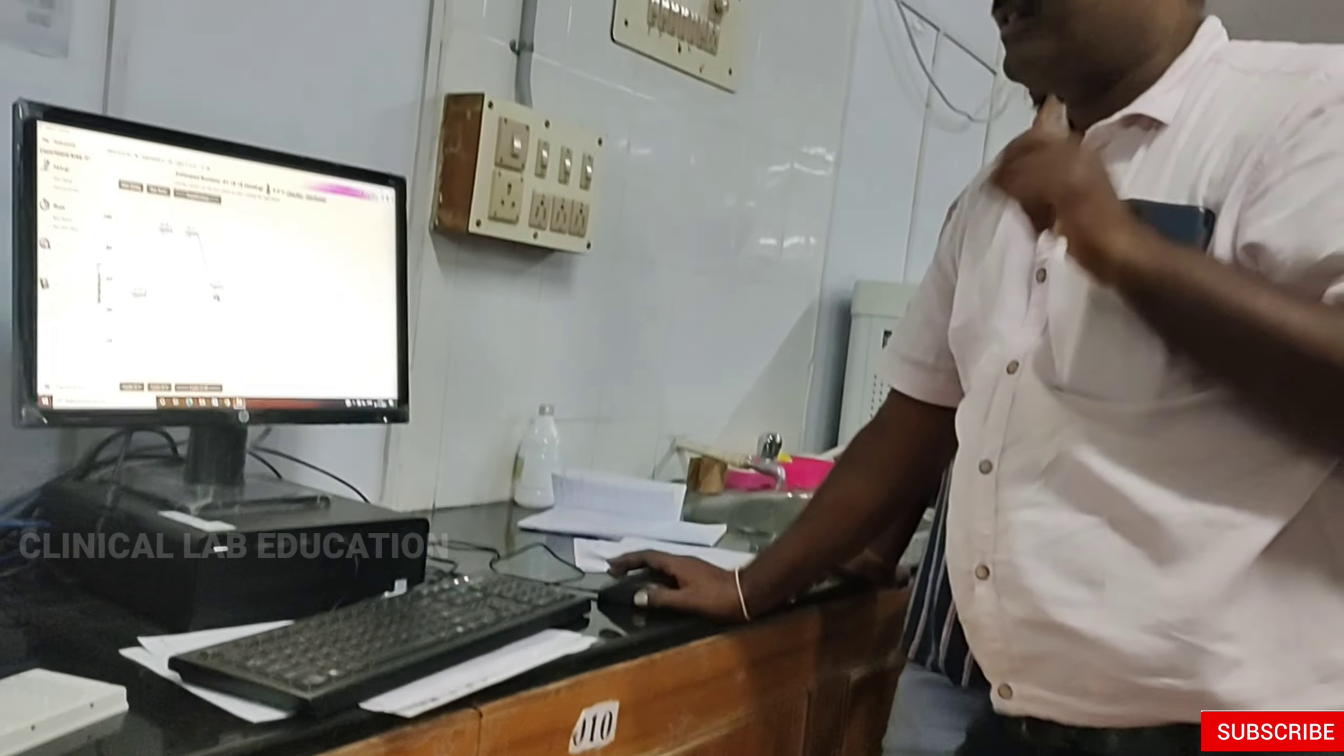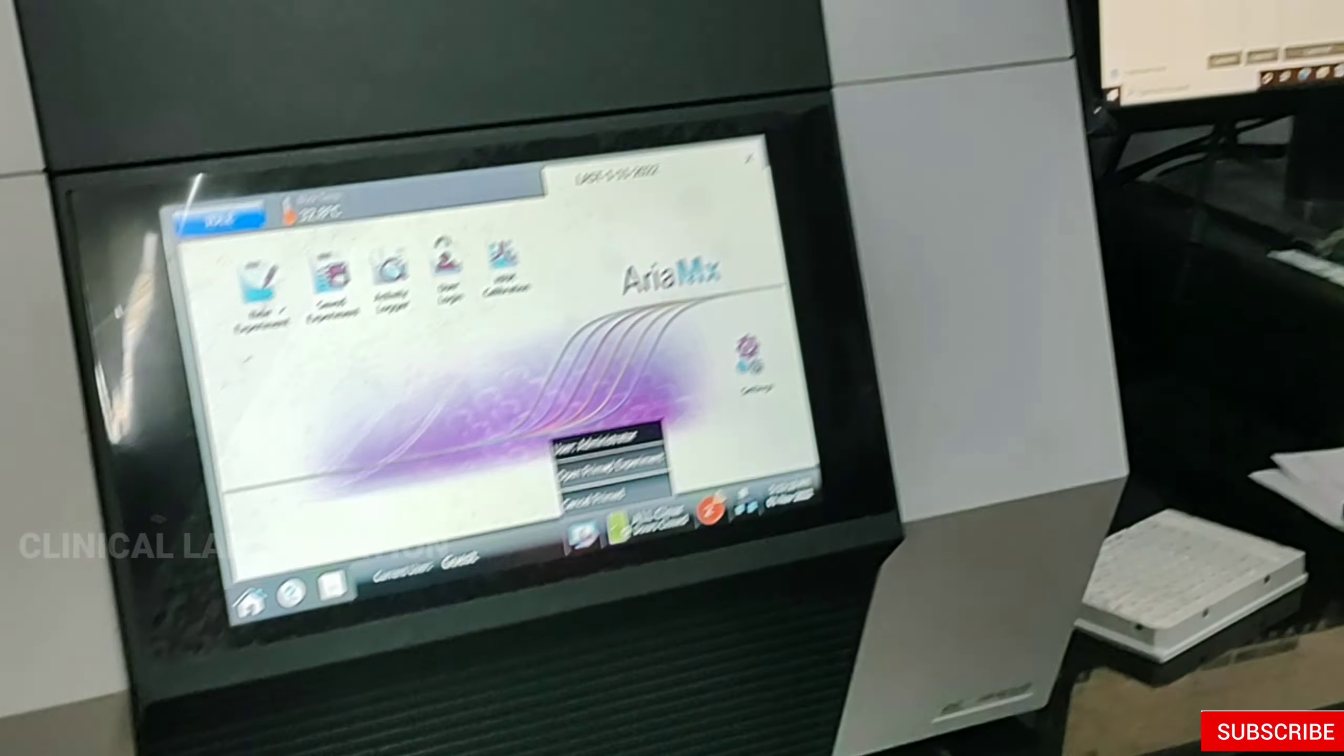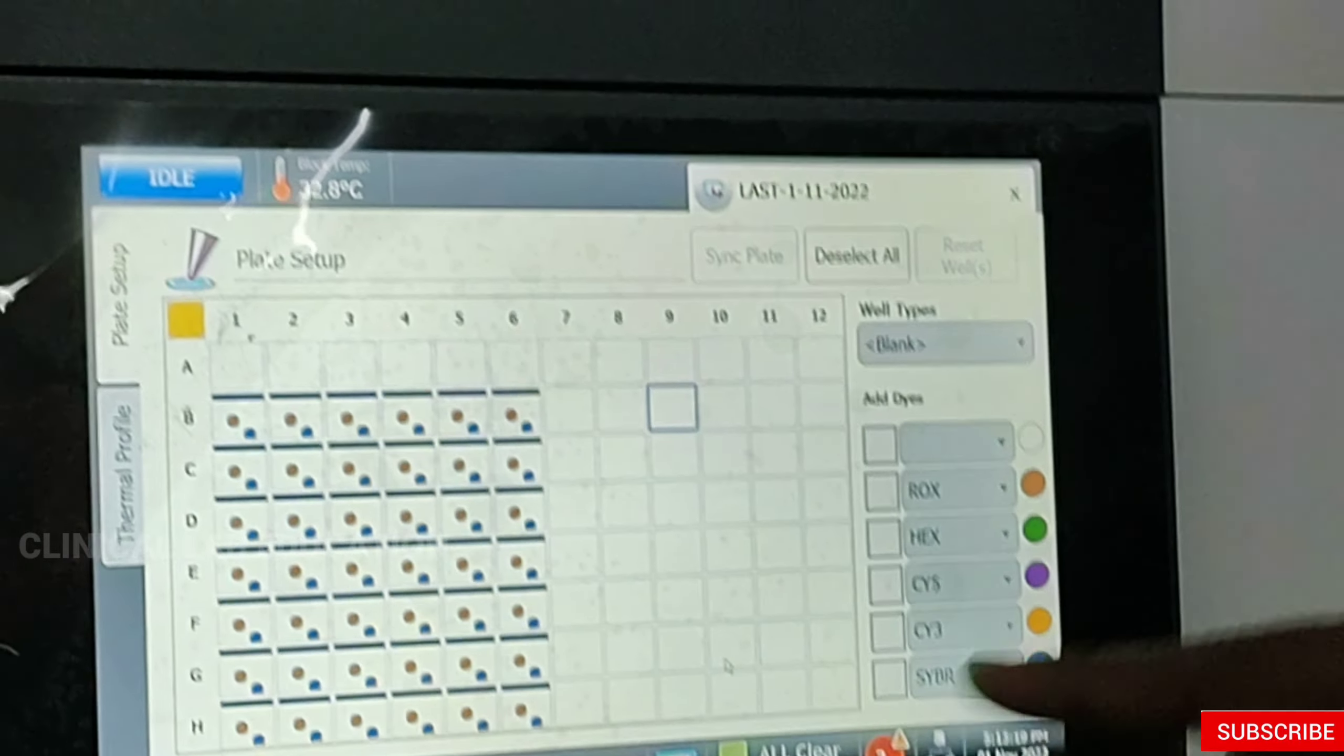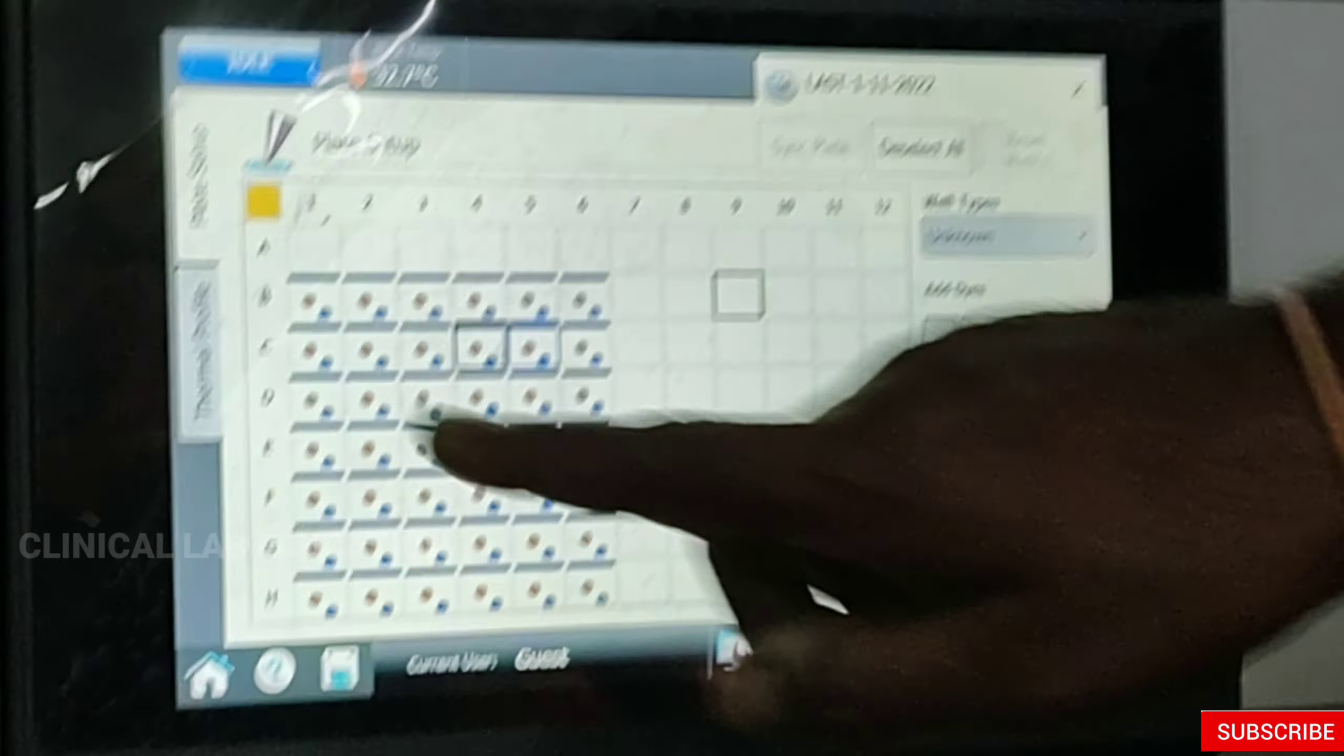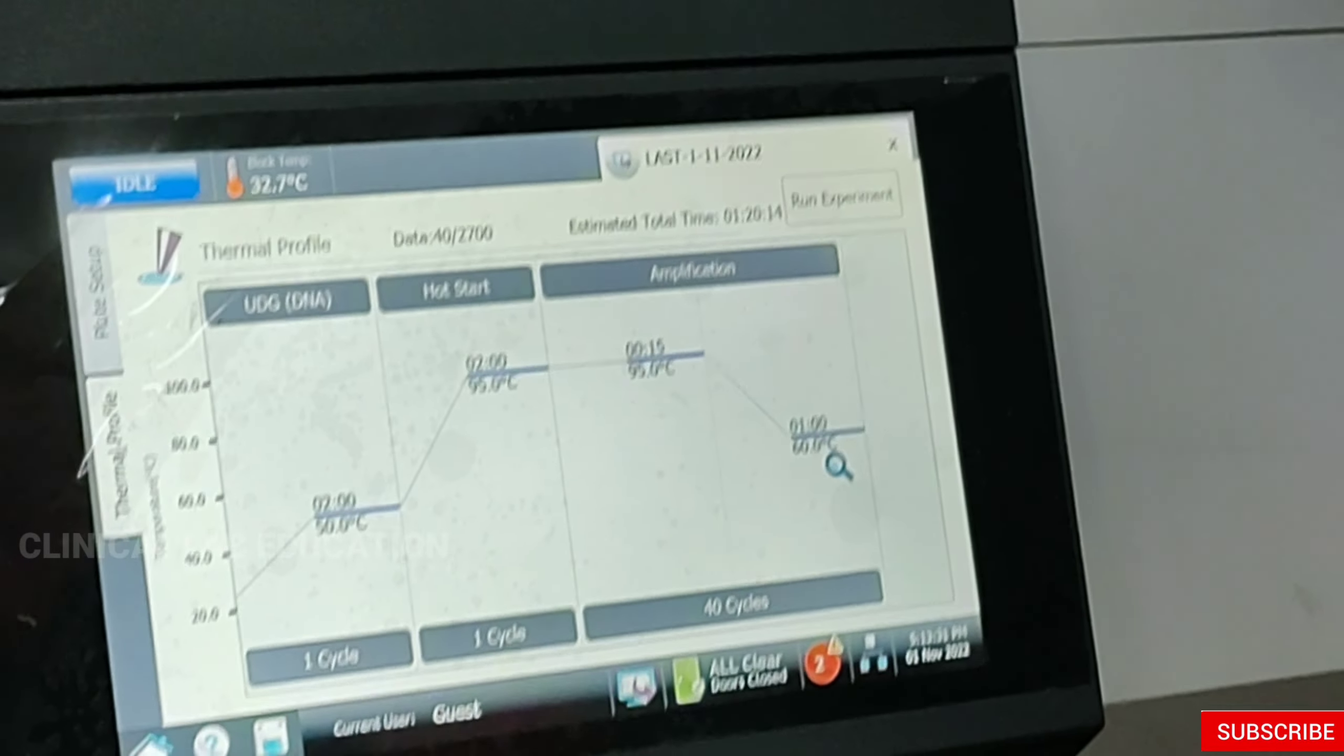The experiment is transferred to the system. Just open this - open the experiment. Whatever experiment we have set will appear. See here, these are the wells we have selected. We have selected ROX and SYBR - that we need to check before starting the instrument. Then check the thermal profile - is it correct or not? 40 cycles also, we can verify here. Like that we need to check everything.